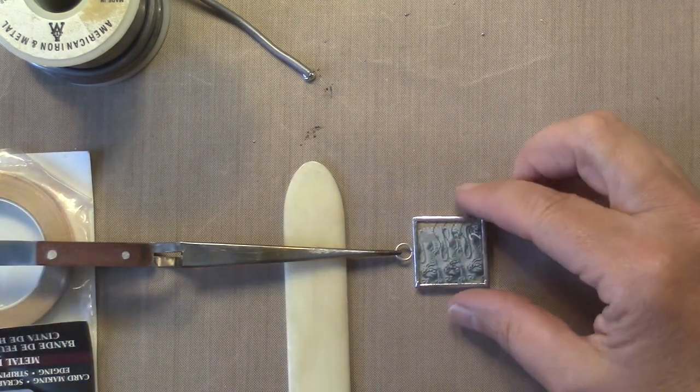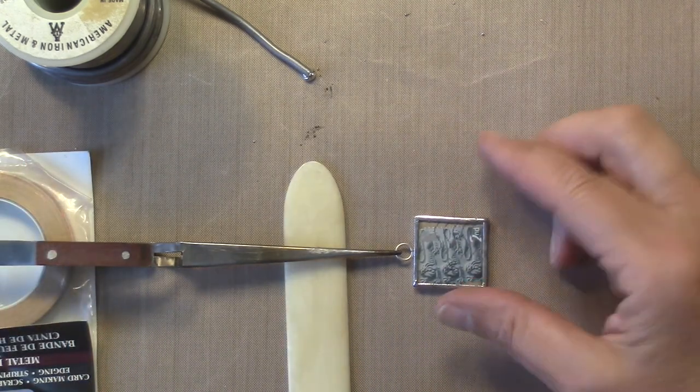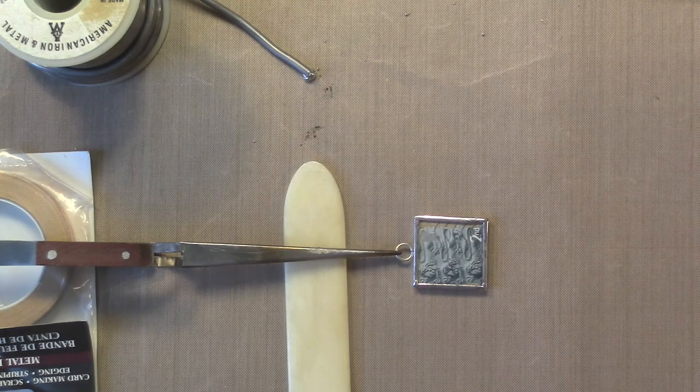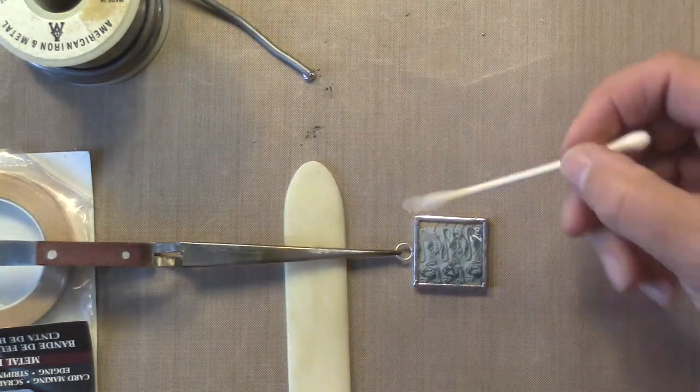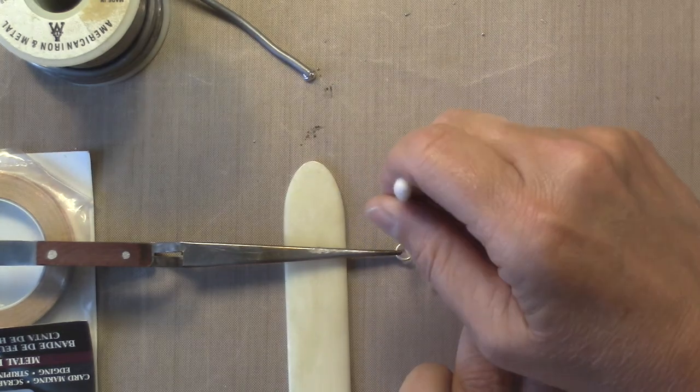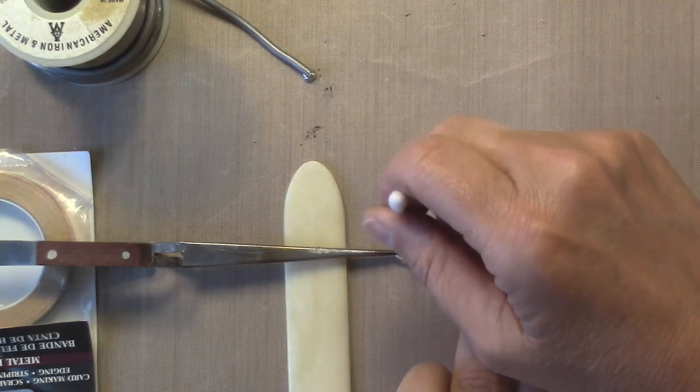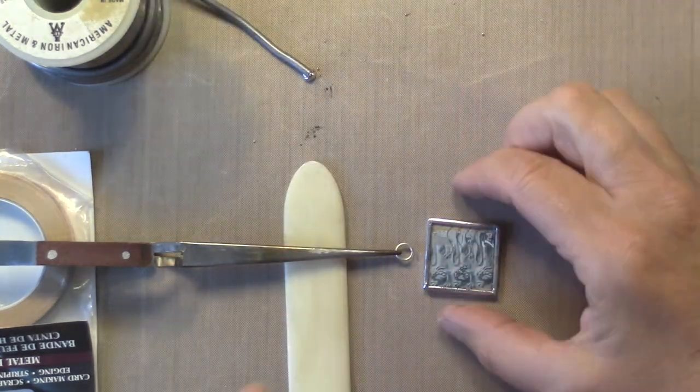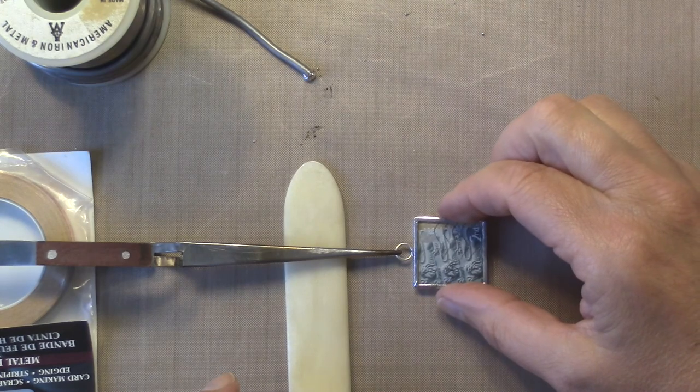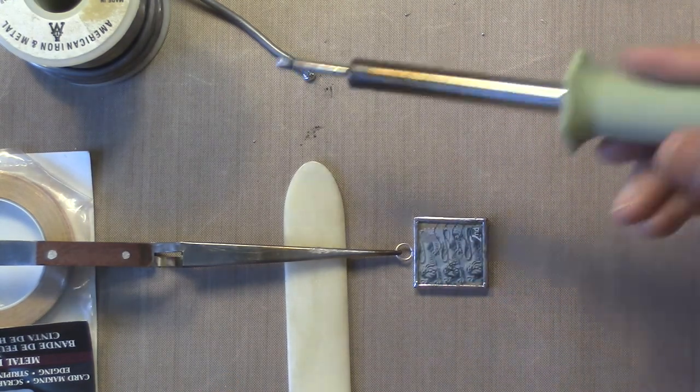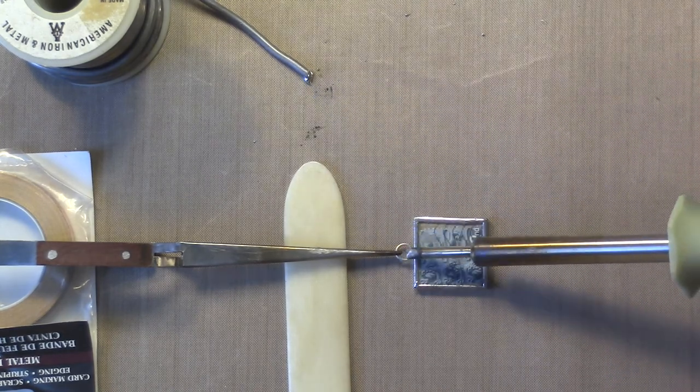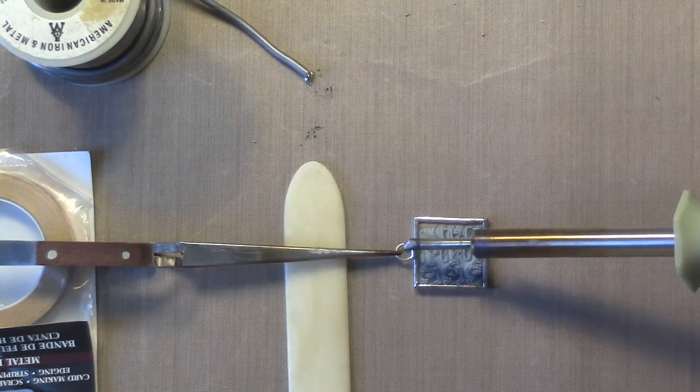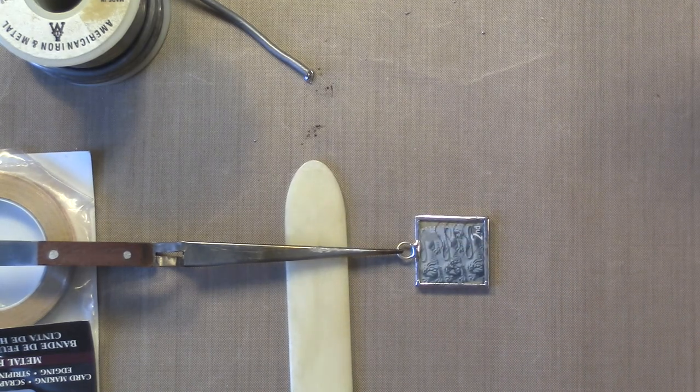And now I'm just going to—don't forget the flux, Jerry almost forgot the flux. So we're going to put flux on there and flux on the jump ring. And now we're just going to grab some solder and drop it right on there. Just like that.